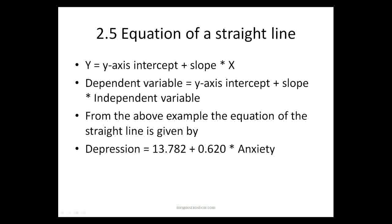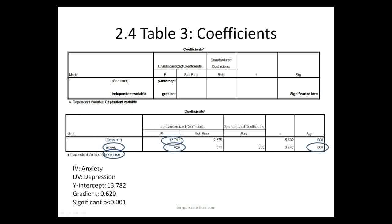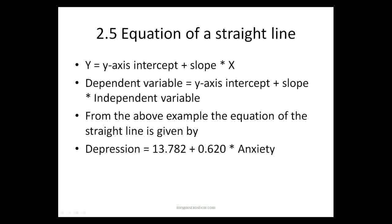We are going to now put that into the equation of a straight line. The straight line will best summarize what is in that data. So if we normally are used to Y equals Y axis intercept plus slope times X. This can be translated into depression equals 13.782 plus 0.62 times anxiety. Remember we get those numbers from at the bottom there, Y intercept and gradient.